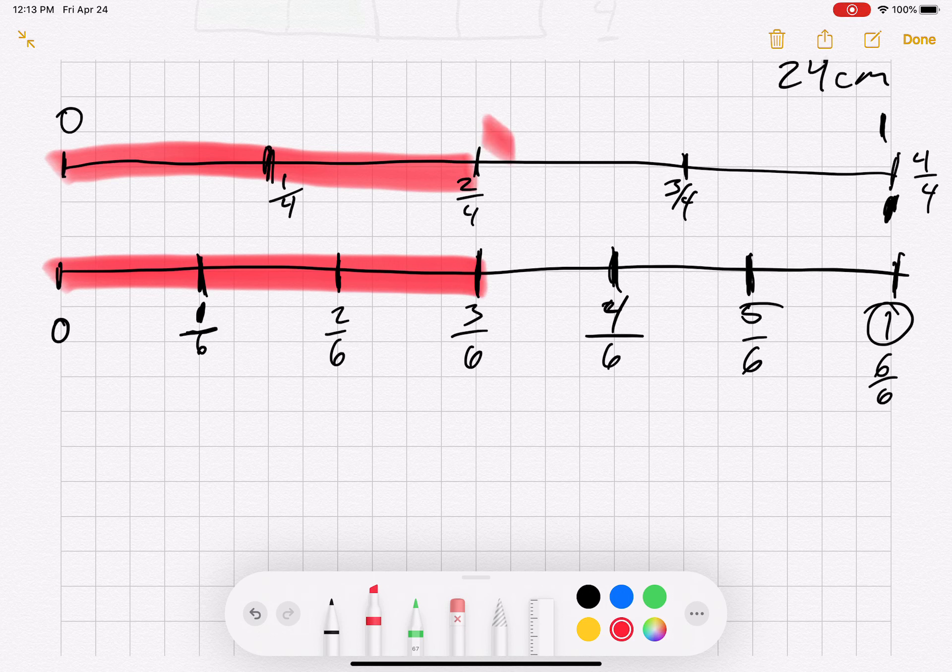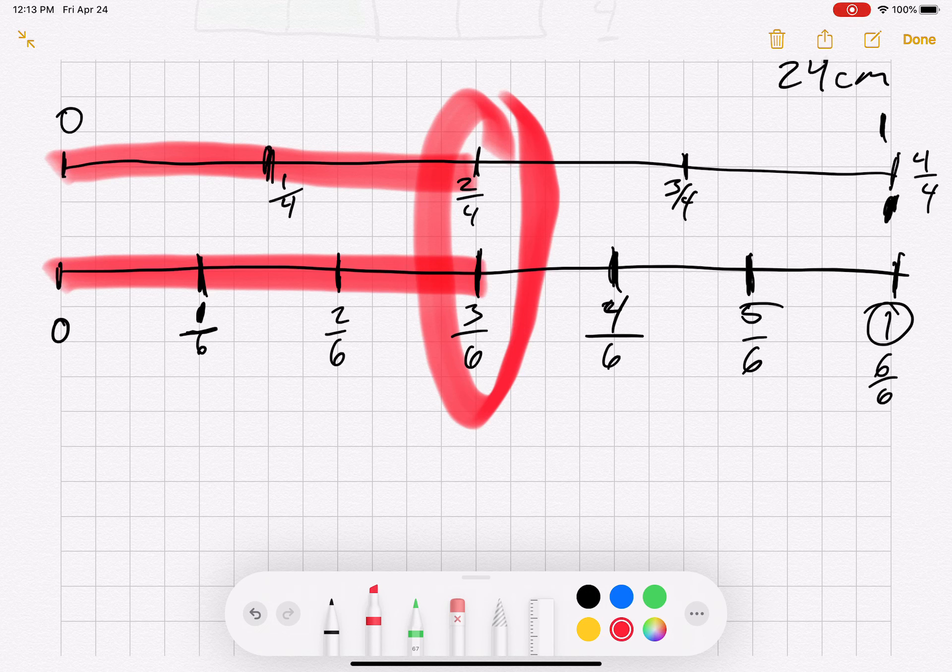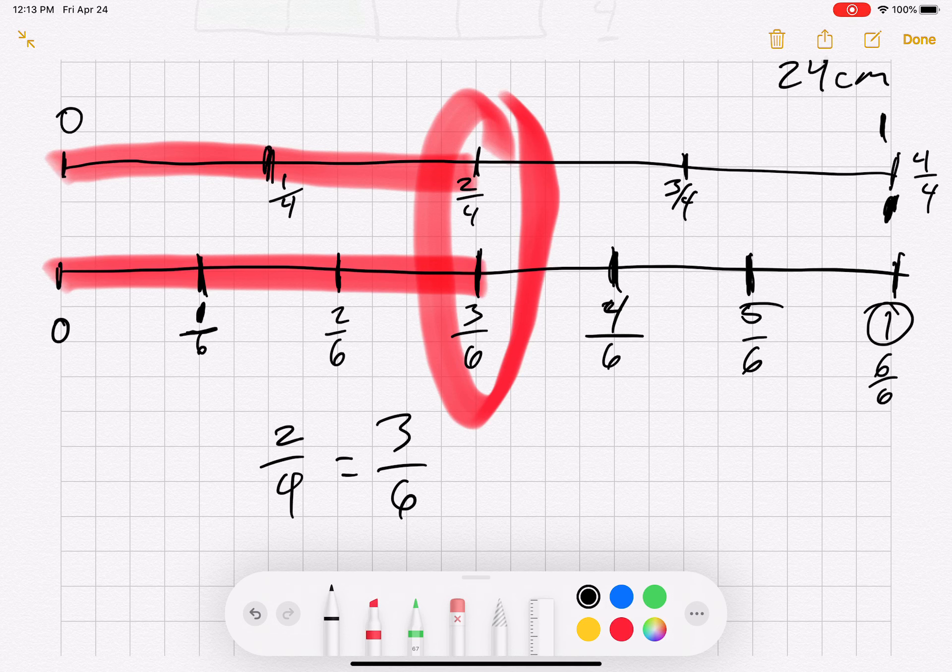These two numbers here, even though the numerators and denominators in the two fractions aren't the same, the fractions are equal because they represent the same place on the number line. So I would write this as two over four is equal to three over six. They would hold the same place on the number line.